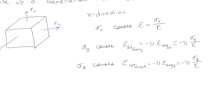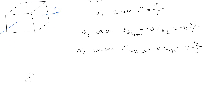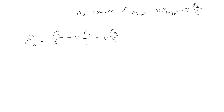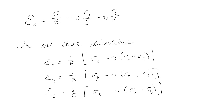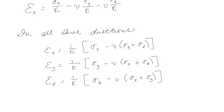If we add them all together, the total strain in the x direction is going to be sigma x over E, minus nu times sigma y over E, minus nu times sigma z over E. And this is actually going to be true in all three directions. So you have this equation written out in all three directions.